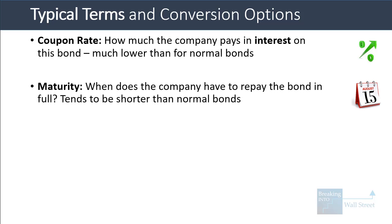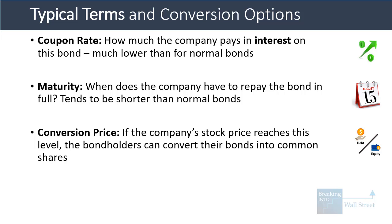Then there's the maturity, which means when the company has to repay the bond in full in the future. This tends to be shorter than it is for normal bonds. So if a normal bond has a maturity of 10 years, a convertible bond might be 5 or 7 years. The conversion price tells you the level that the company's stock price has to reach for bondholders to convert into common shares — usually a premium to the current share price, something like 30%, 40%, or 50%.